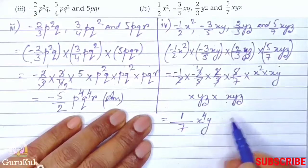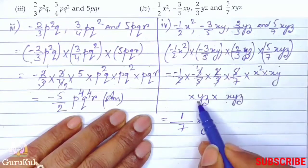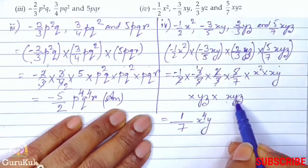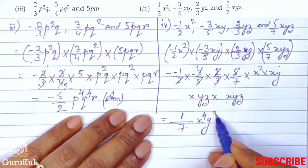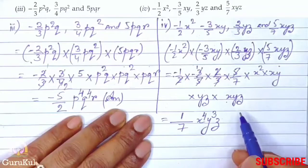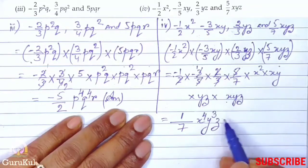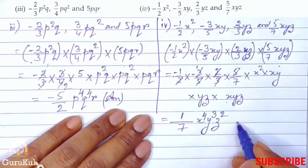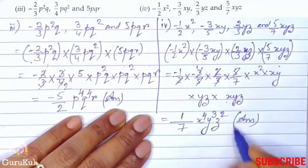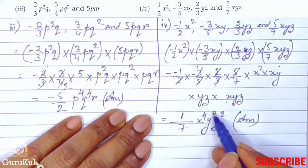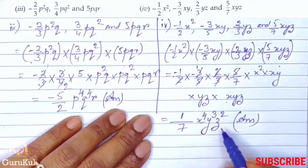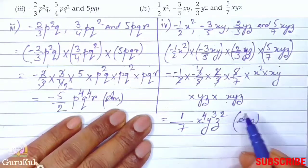Then comes y: y to the power 1, y to the power 1, y to the power 1, that becomes y to the power 3. Then comes z: z is 1 plus 1, which is 2. So the final answer is 1 by 7, x to the power 4, y to the power 3, z to the power 2.